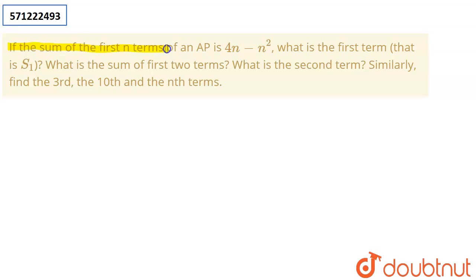If the sum of first n terms of an AP is 4n minus n squared, what is the first term, that is S1? What is the sum of first two terms and what is the second term? Similarly...